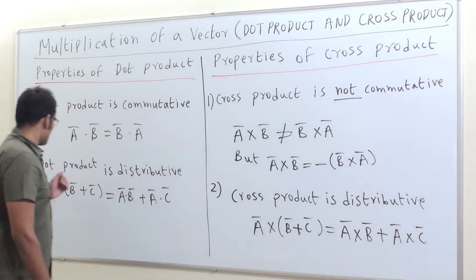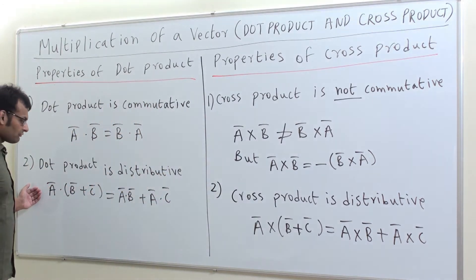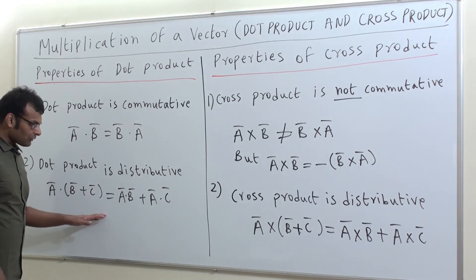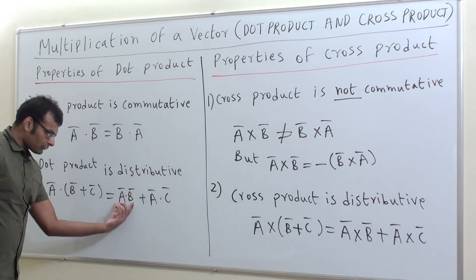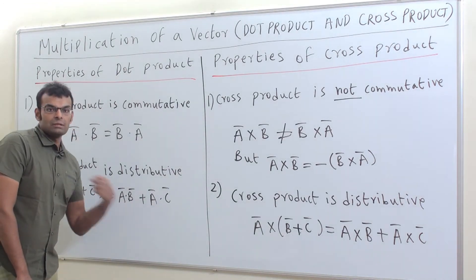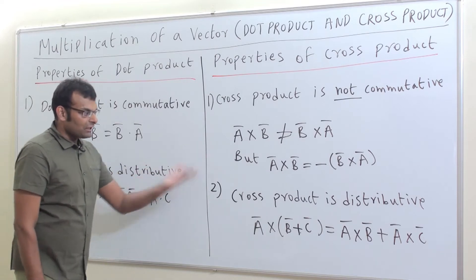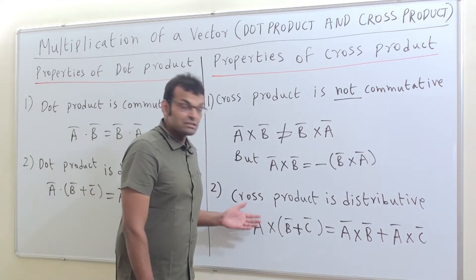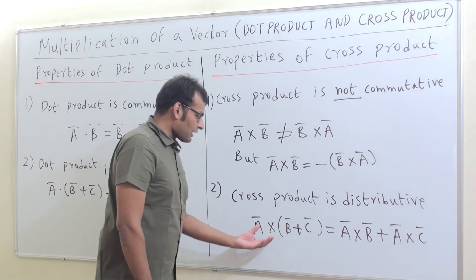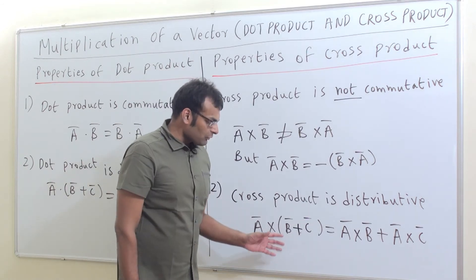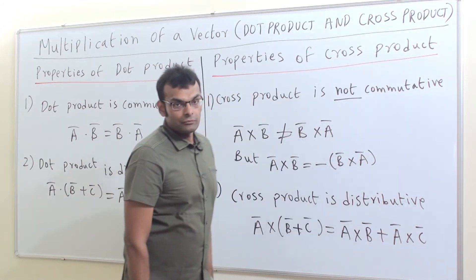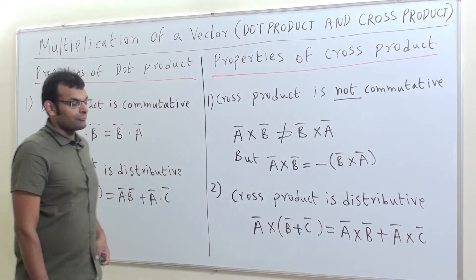Dot product is distributive: A bar dot (B bar plus C bar) equals A bar dot B bar plus A bar dot C bar. Similarly, cross product is also distributive: A bar cross (B bar plus C bar) equals A bar cross B bar plus A bar cross C bar.